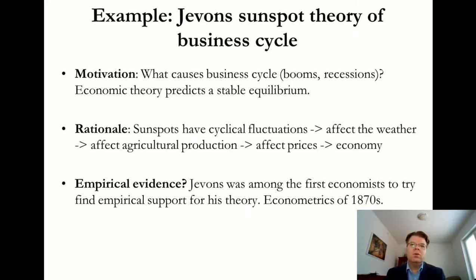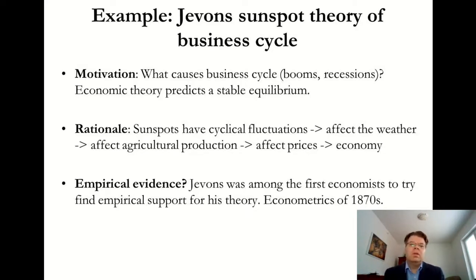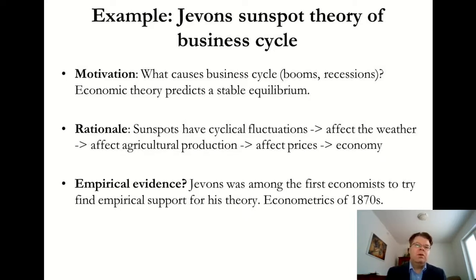Astronomers had already found the sunspot cycle, so Jevons was trying to explain the business cycle as caused by the cyclical behavior of solar radiation, which in the 19th century could affect the weather. At that time, agricultural production was a very important sector of the economy. So if there is some cyclical behavior in the weather due to solar activity, that would affect agricultural production, which could then affect the price level and hence the economy.